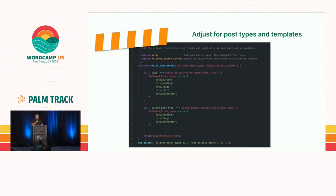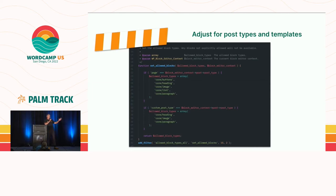We can do a little more with that filter. In this example, we're setting those allowed blocks and whitelisting them on a post type basis. If it's a page, we want button, heading, image, list, paragraph. If it's our custom post type, we just want heading, image, and paragraph. You can probably think of other conditionals you might use to target that — and again, this is the same filter, just in PHP.